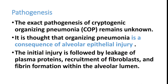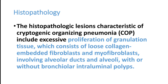The exact pathogenesis of cryptogenic organizing pneumonia is not known, but it is mostly a consequence of alveolar epithelial injury. The initial injury is followed by leakage of plasma proteins, recruitment of fibroblasts, and fibrin formation within the alveolar lumen. It consists of loose collagen-embedded fibroblasts and myofibroblasts involving alveolar ducts and alveoli, with or without bronchiolar intraluminal polyps.